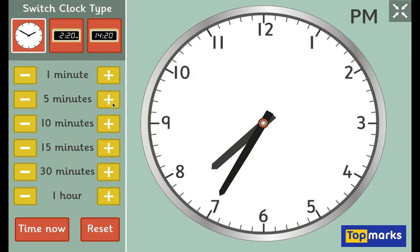There are 60 minutes in an hour. If I put it on the 7, that's 35 minutes past 7. But because we don't say 'past' after half past, it's now got 25 minutes — 5, 10, 15, 20, 25 minutes until it gets to 8 o'clock. So it's 25 to 8.